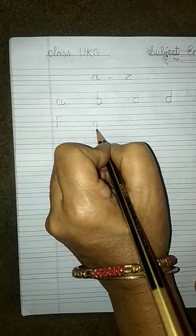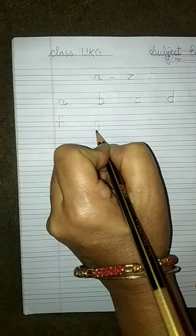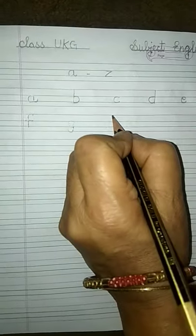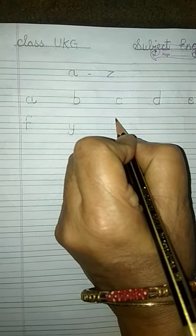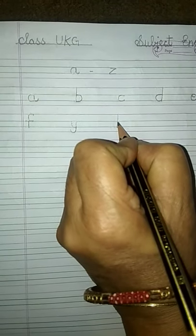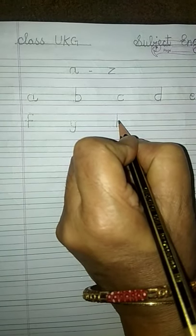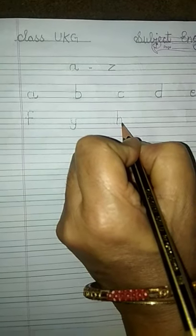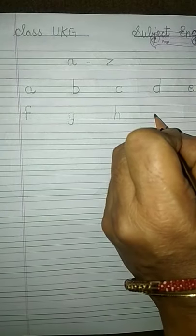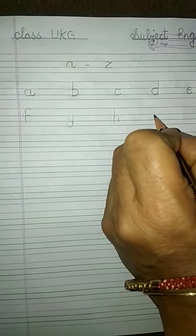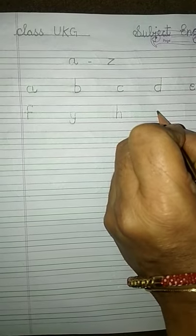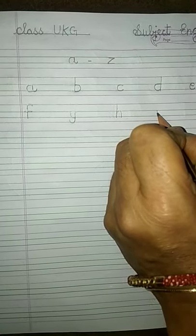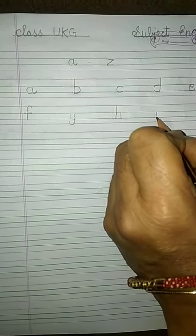H — one standing line and a small curve coming downward: H. I — one standing line from the first blue line to the second blue line, and a dot above the line: I.